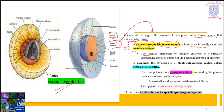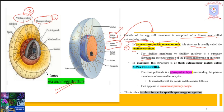The vitelline membrane or vitelline envelope is a structure surrounding the outer surface of the plasma membrane of an ovum. In this diagram, the vitelline envelope is very clearly represented — it is positioned just outside the plasma membrane. In the first diagram also, you can see the plasma membrane here and the vitelline envelope here. So first layer is plasma membrane, then outer to the plasma membrane, you can see the vitelline envelope, which is present in invertebrates and non-mammals.